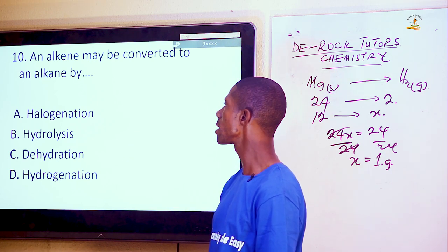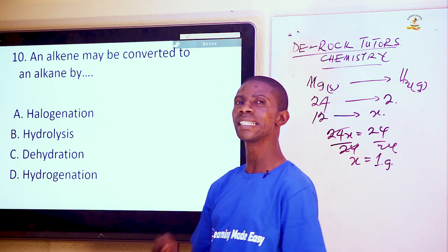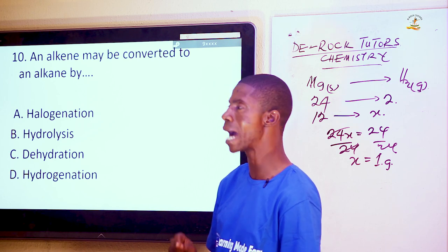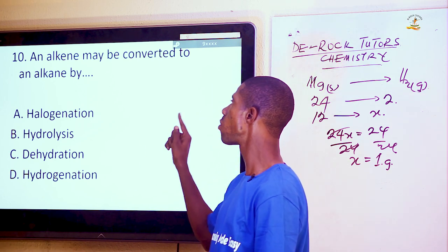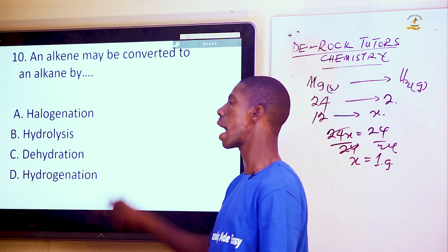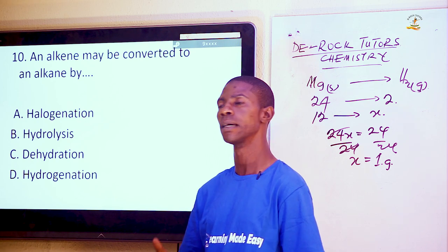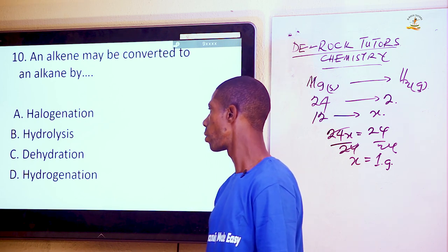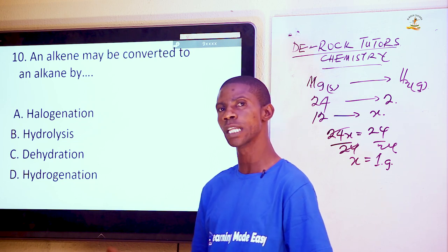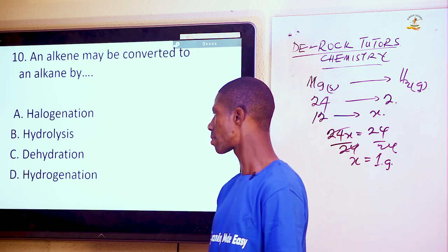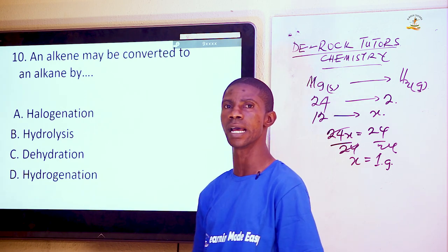Question 10: An alkene may be converted to an alkane by — alkene is a double-bond hydrocarbon, aliphatic in nature. To convert it to a saturated straight-chain alkane, we add hydrogen in the presence of nickel as a catalyst. This process is called hydrogenation, which is option D.